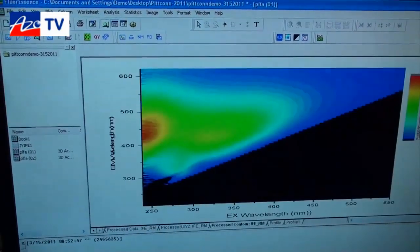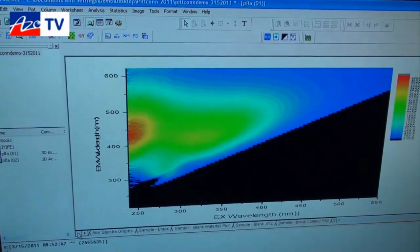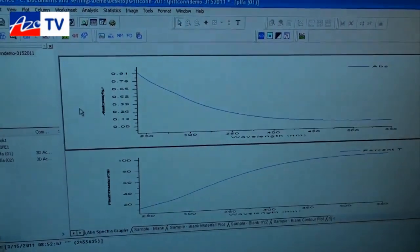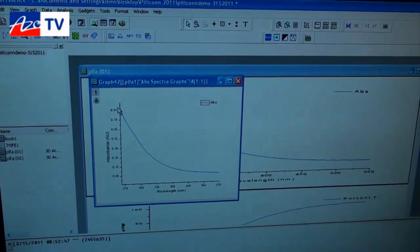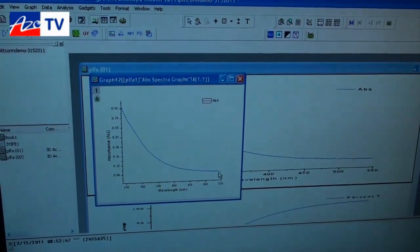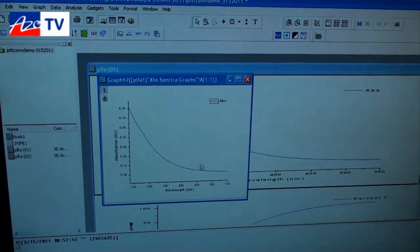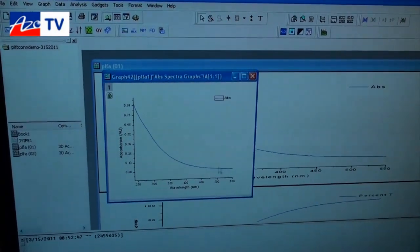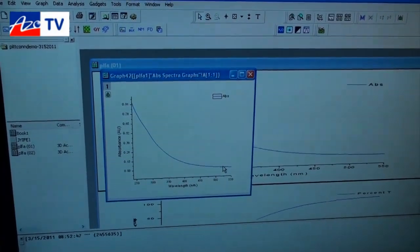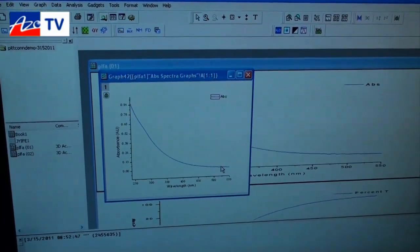At the same time we also acquire an absorption spectrum and the absorption spectrum is important for two reasons. It's important because it's measured simultaneously with the fluorescence so you have a kinetic match and the data from the same instrument is available for the processing as I'll explain here in a few seconds.